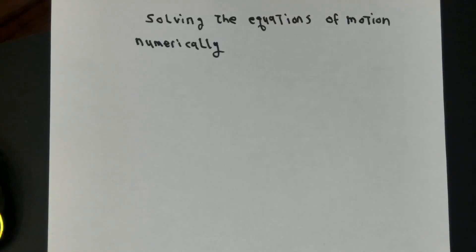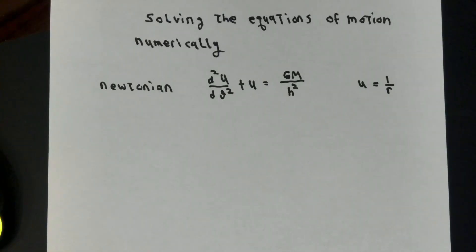These differential equations look a great deal like the Newtonian equations. We have previously seen that the solutions will be u equal gm over h squared plus a constant times cosine theta plus another constant times sine of theta.